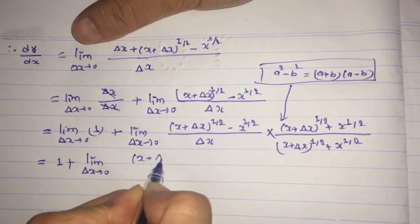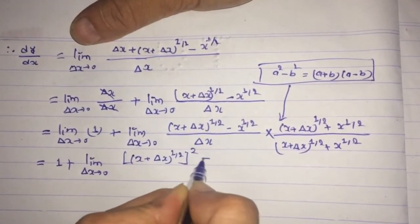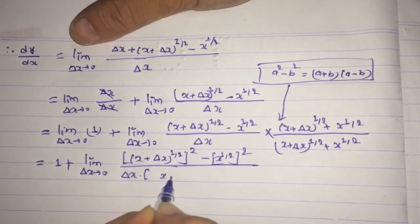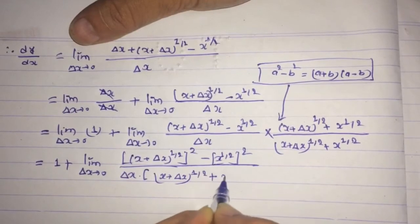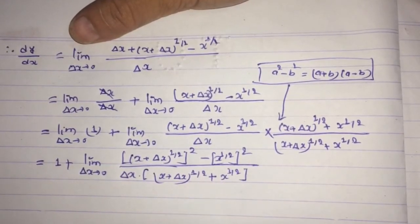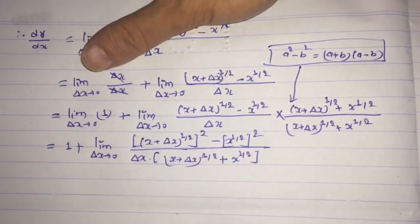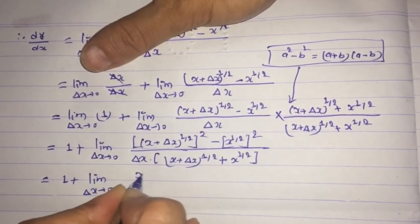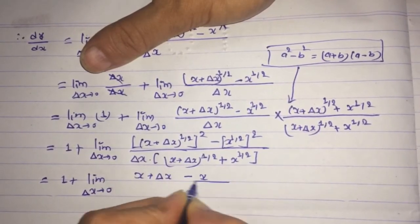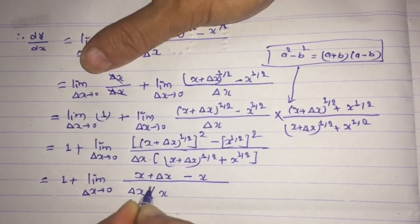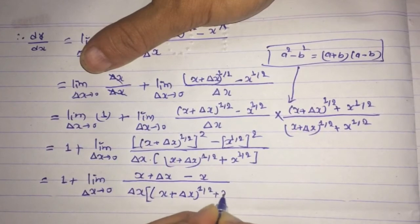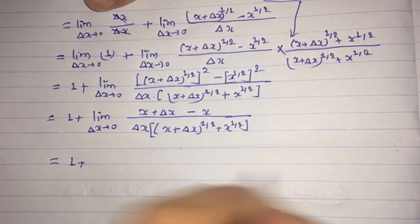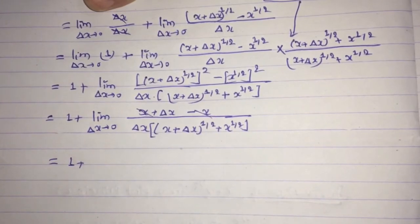The limit as δx tends to 0 of 1 has the value 1. After applying the conjugate multiplication, we get [(x + δx)^(1/2)]² minus [x^(1/2)]² in the numerator, all divided by δx times [(x + δx)^(1/2) plus x^(1/2)].